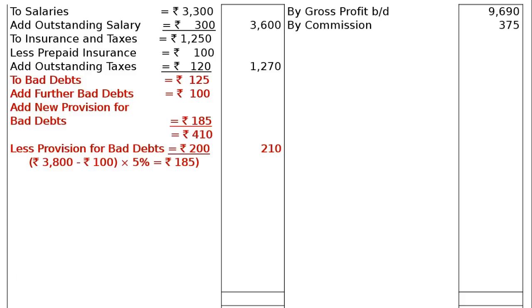To explain how rupees 185 was calculated: debtors are rupees 3,800, out of which further bad debts rupees 100 is deducted, leaving rupees 3,700. 5% of rupees 3,700 equals rupees 185.